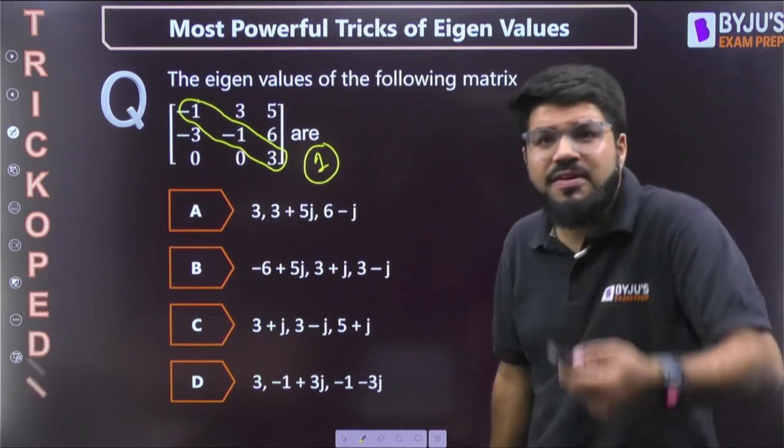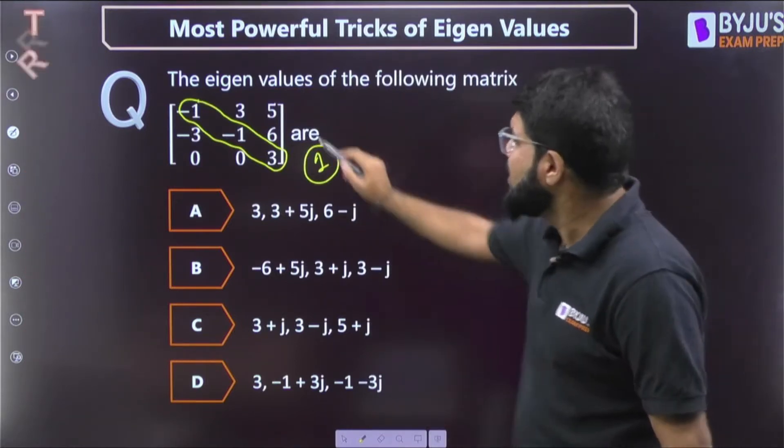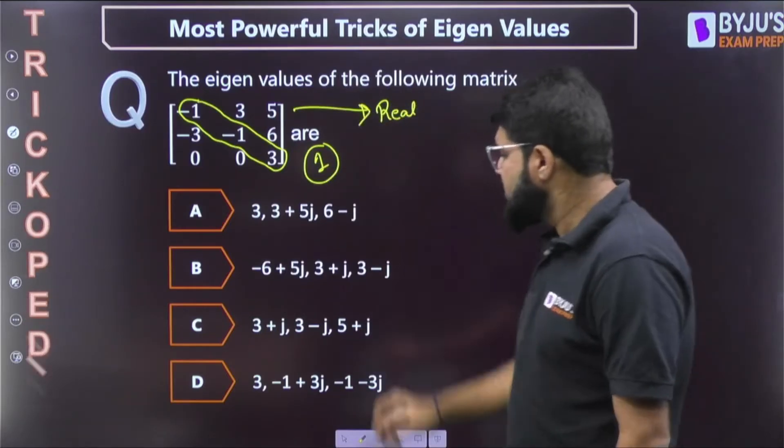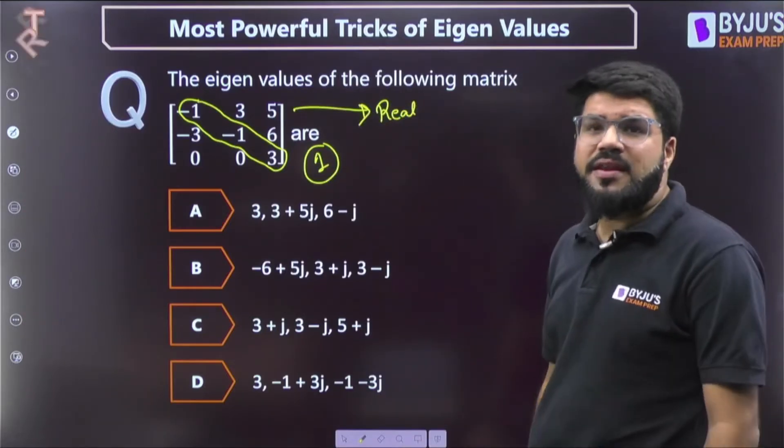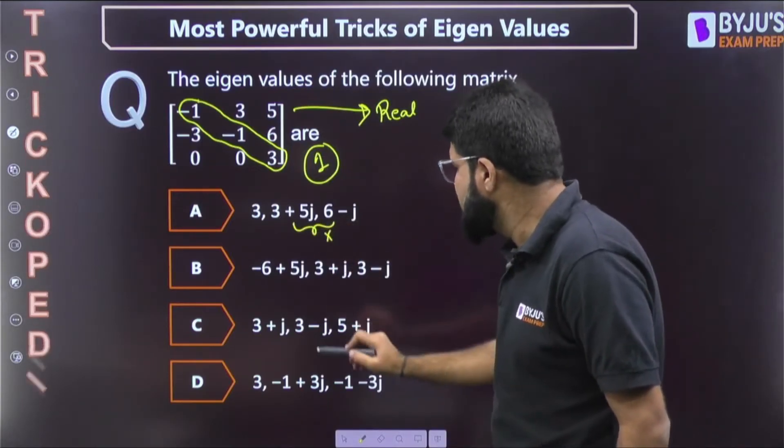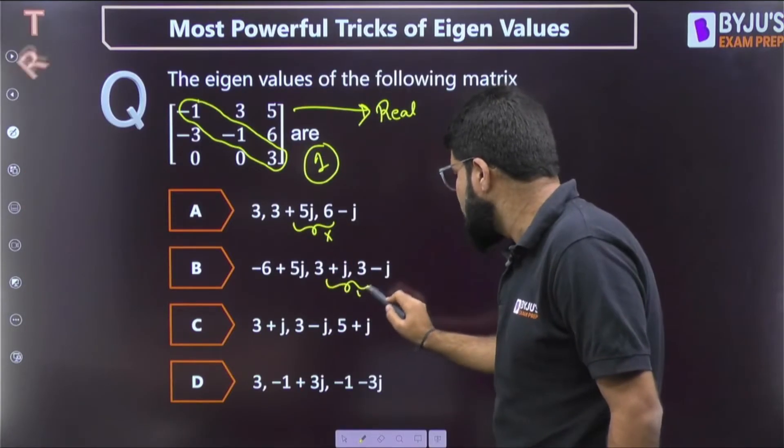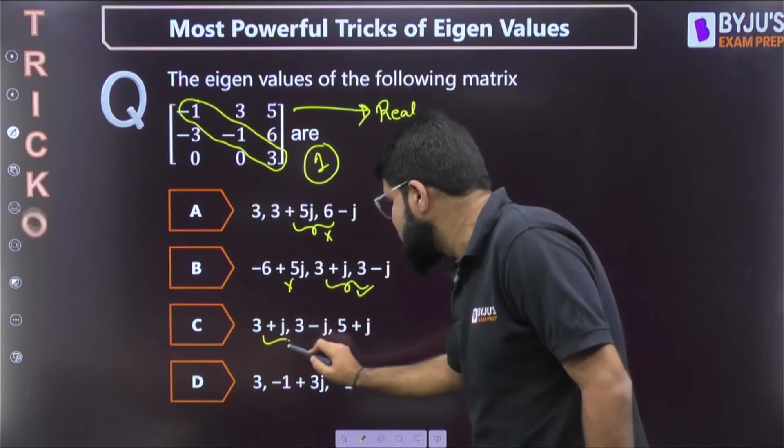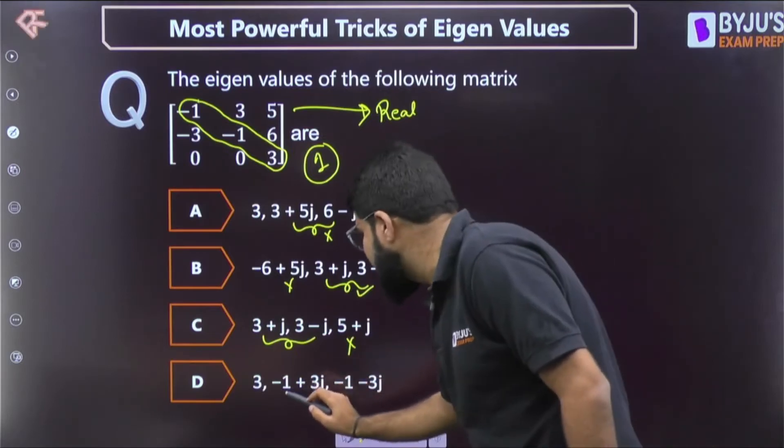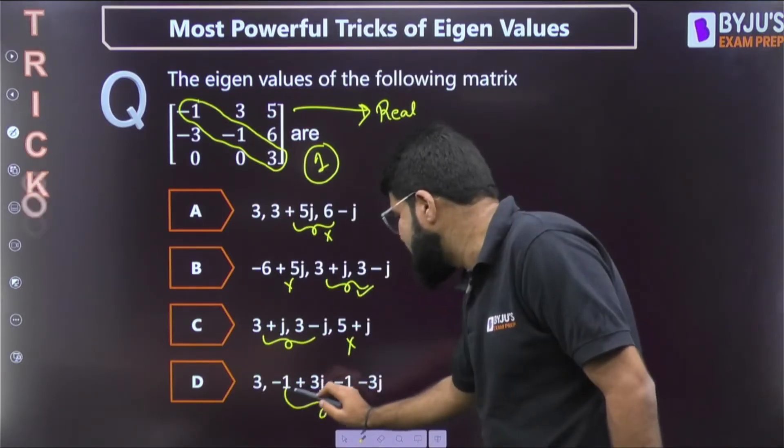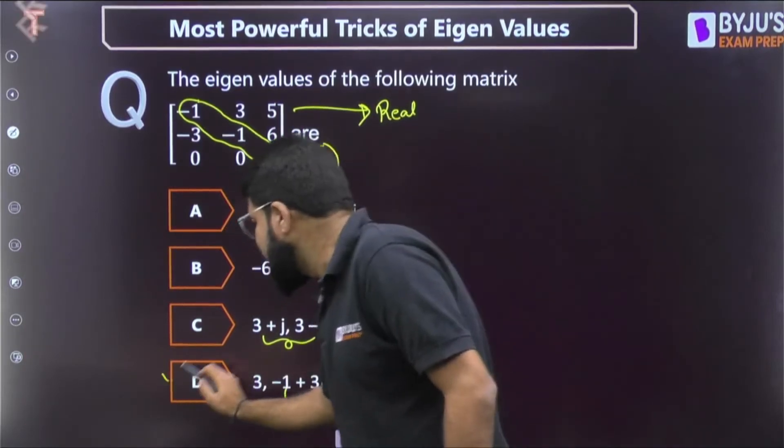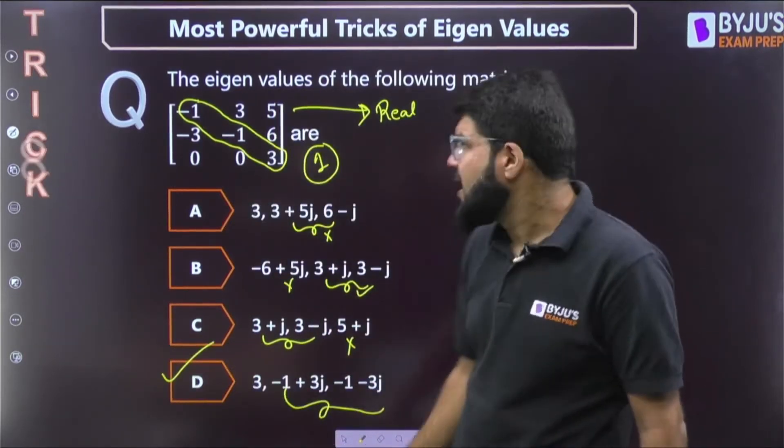I will make it even more simple. This is a real matrix, and for a real matrix if there is a complex eigenvalue it must be in conjugate pair. These are not conjugate, these are conjugate but this cannot be alone. This is also conjugate but 5 plus j cannot be alone. So there is only one option D which satisfies the conjugate property: alpha plus i beta, alpha minus i beta, 3 is real. Real number can be alone. So only correct answer is D, very simple. You can check it by the sum of eigenvalue as well.